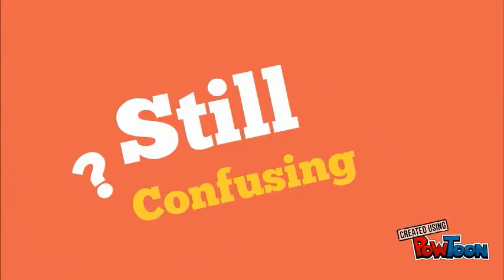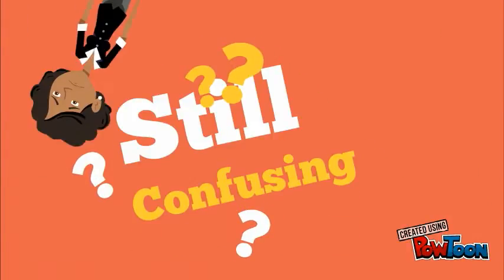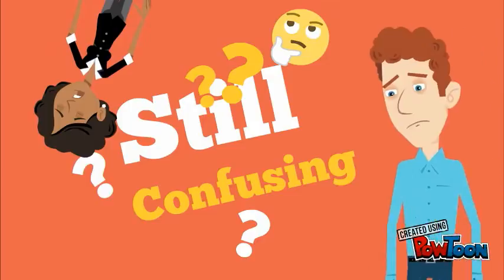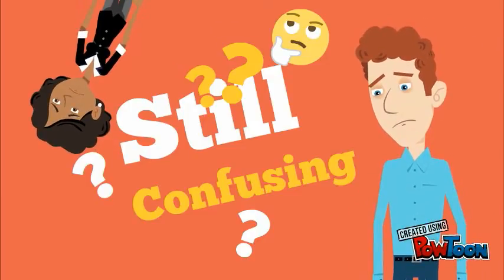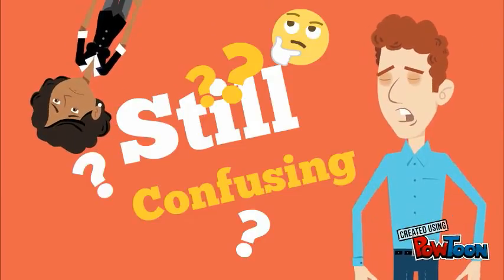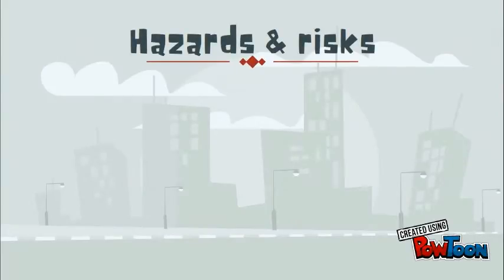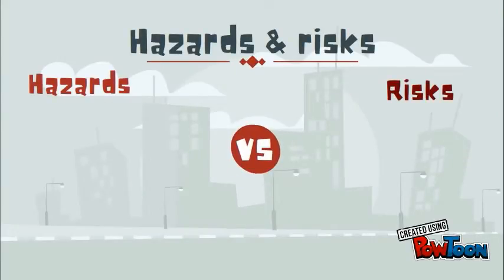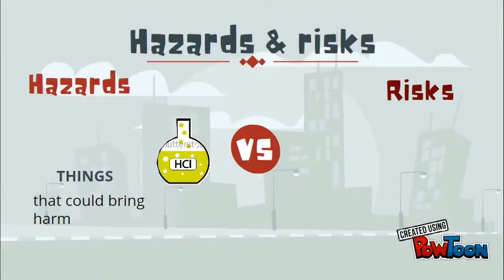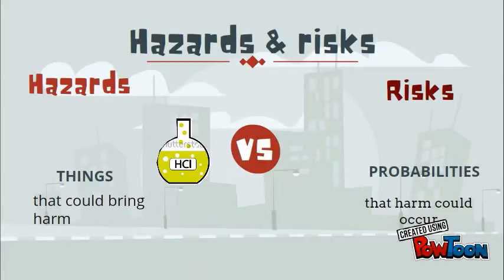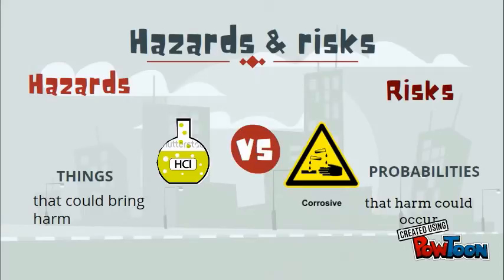Are you still confused about the differences between risk and hazard from the previous lecture? Don't worry, let me explain. What is the difference between hazards and risks? Hazards are things that could bring harm, such as hydrochloric acid, whereas risks are probabilities that harm could occur. For example, if you play around with acid, you might get injured.